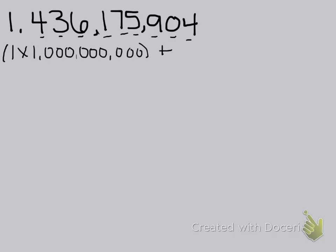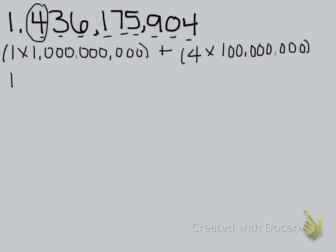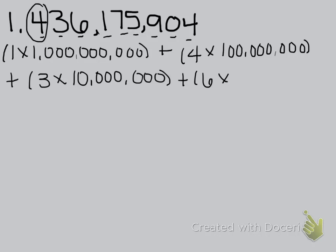Plus the next digit is the 4, and it is in the 100 millions place, so I'm going to do 4 times 100 million — I need 8 zeros there. And next is the 3, and it's in the 10 millions place, so 3 times 10 million. Plus the 6 is in the millions place, so 6 times 1 million.